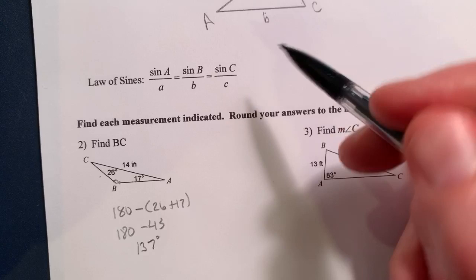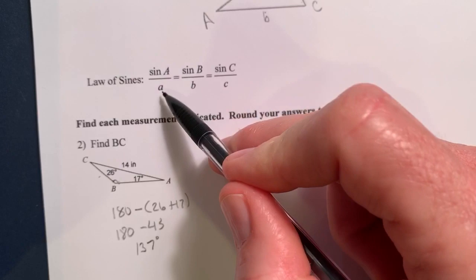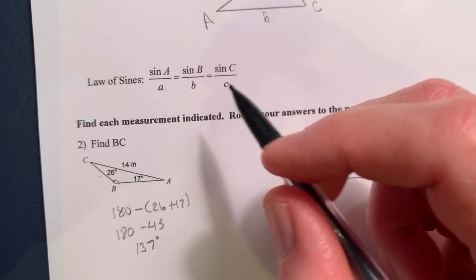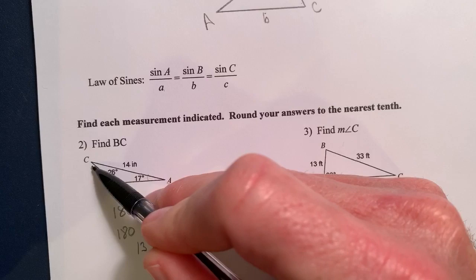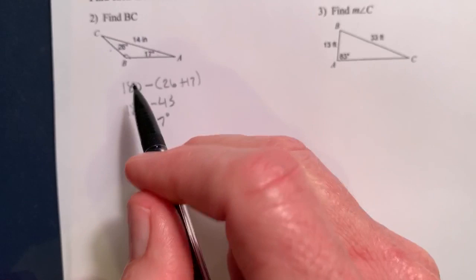Law of Sines again. So I'm going to go sine of 137 over 14 equals, I don't know what I'm trying to find, BC, sine of 17 over A. That would be the length that I'm trying to find. So here we go.